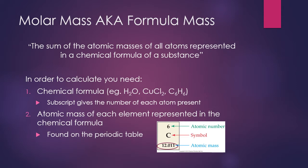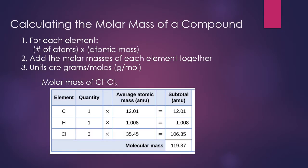The subscript gives us the number of each atom present. We're going to use that subscript in conjunction with the atomic mass found on the periodic table to calculate the molar mass of the chemical formula. For example, with the chemical formula CHCl₃, we calculate the molar mass by making a list of each element present — in this case carbon, hydrogen, and chlorine — then writing how many of each element are present.